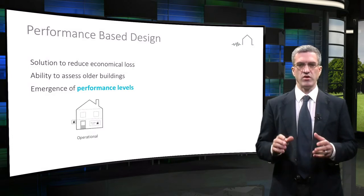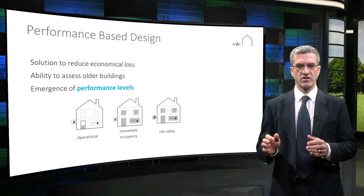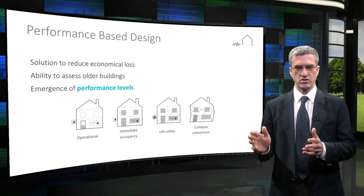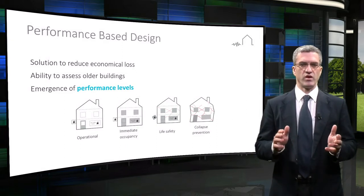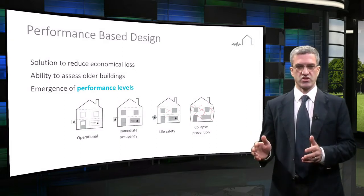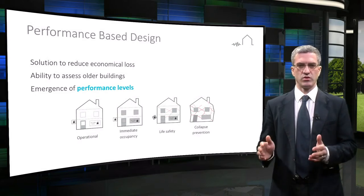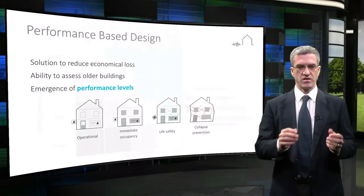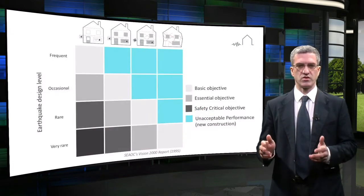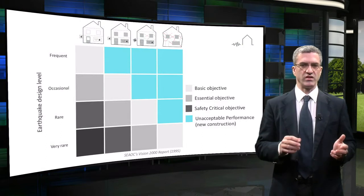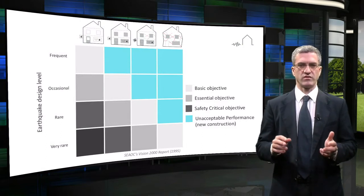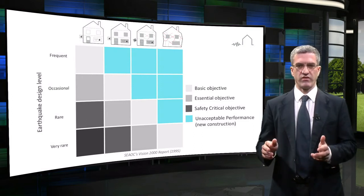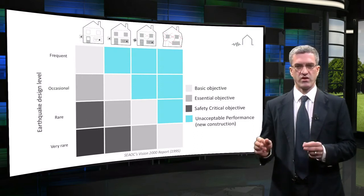Firstly, maybe objectives other than preventing collapse were important — for example, damage control to reduce economic loss, particularly for important buildings and infrastructure. Secondly, how does one assess older buildings not complying with modern seismic provisions? This movement developed the concept of performance objectives and the idea that multiple objectives might apply, depending on the severity of the supposed seismic event and the required post-earthquake functionality.